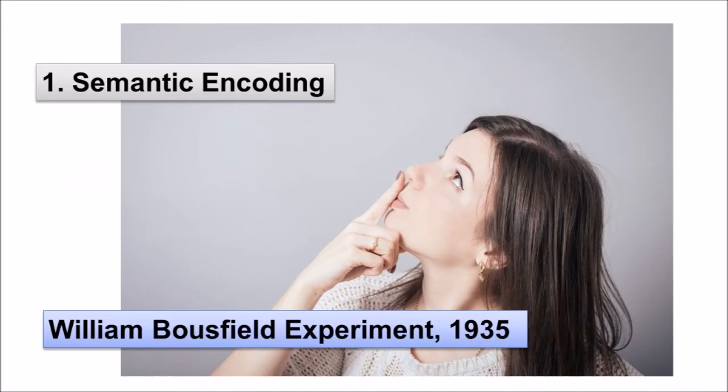There are three types of encoding. The encoding of words and their meaning is known as semantic encoding. It was first demonstrated by William Bousfield, 1935, in an experiment in which he asked people to memorize words. The 60 words were divided into four categories of meaning, although the participants did not know this because the words were randomly presented.